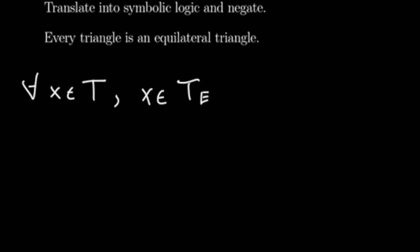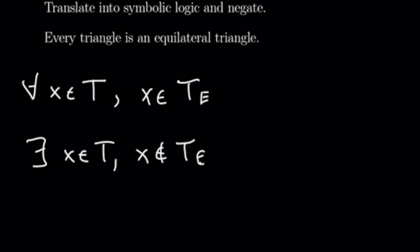So let's go ahead and negate this. That means there exists an arbitrary triangle such that x is not an equilateral triangle. Of course we know that every triangle is not an equilateral triangle, but we're not going to be going over the validity of these statements — we're just here to translate them and negate.